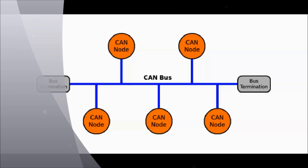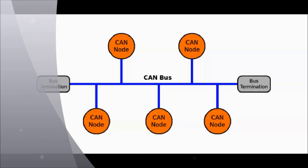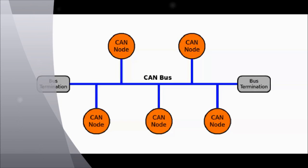Later on, CAN was adopted by many embedded industries. Here you see a lot of CAN nodes connected to a central bus, shown in blue. The CAN bus has been terminated using some impedance or load — we'll go into detail about that in the next video. Basically, CAN is a multi-master broadcast transmission protocol, so any node can transmit and all other nodes can receive.